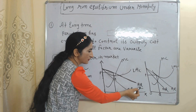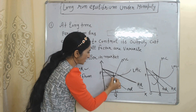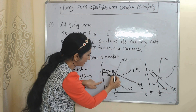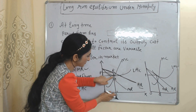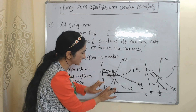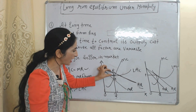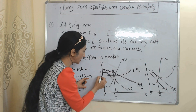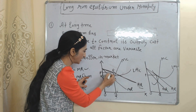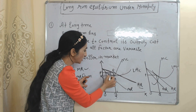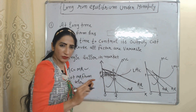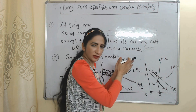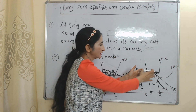This is our long-run average cost curve and this is our long-run average revenue curve. Here you can see RQ is our average revenue and TQ is our average cost. The difference between average revenue and average cost — RT — will be called per unit super normal profit, and the whole area KPRT will be called total super normal profit of the monopoly at the long-run period.